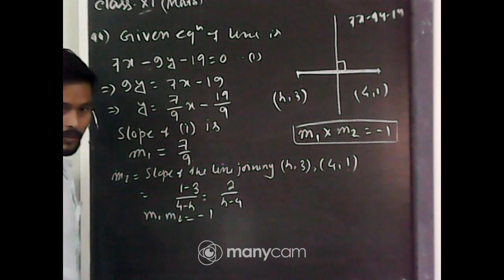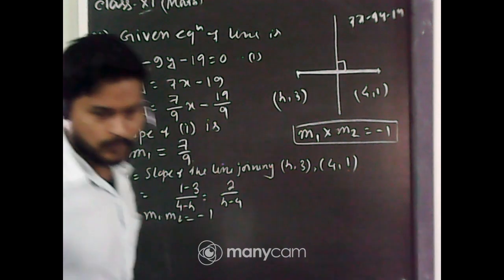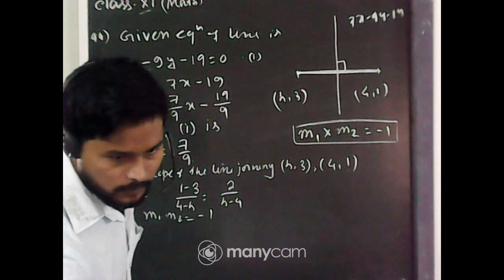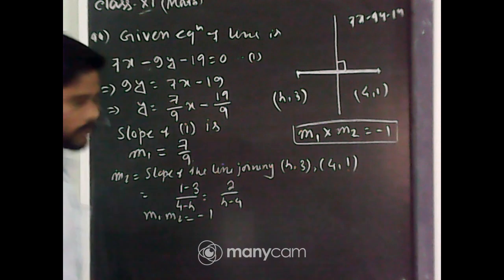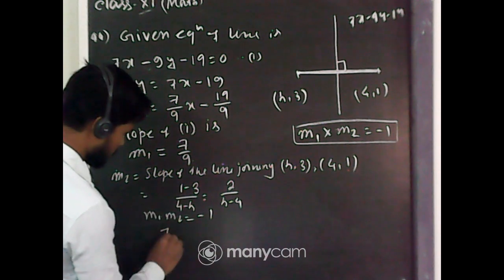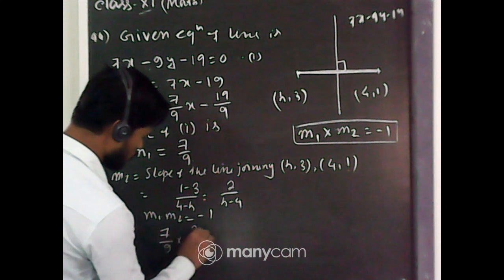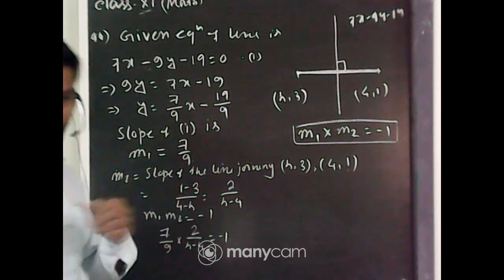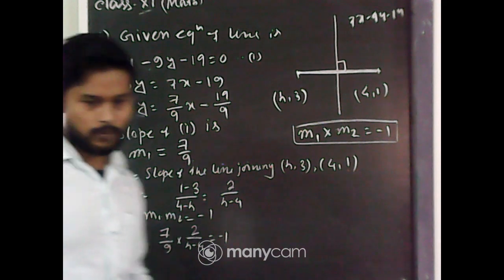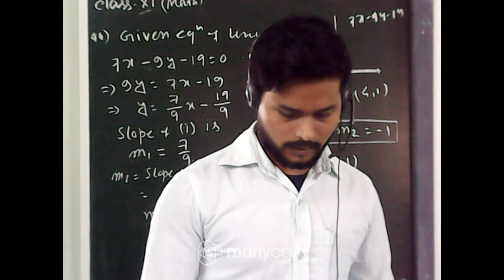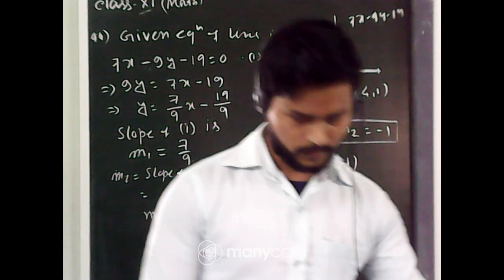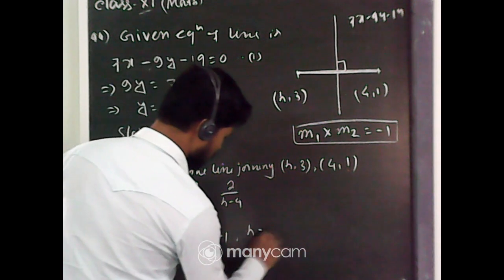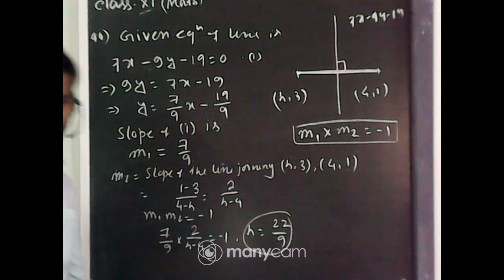Since the lines are perpendicular, m₁ × m₂ = -1: (7/9) × (2/(h - 4)) = -1. Solving this linear equation gives h = 22/9.